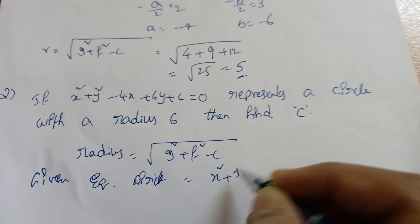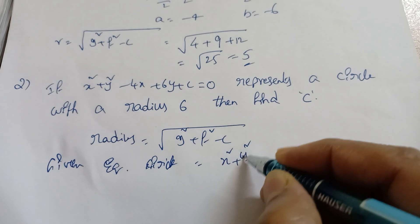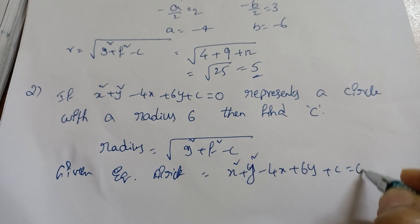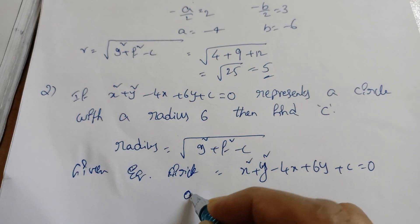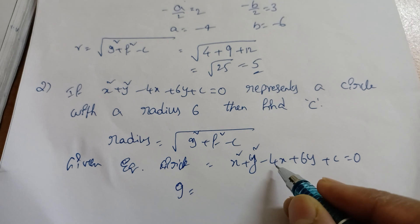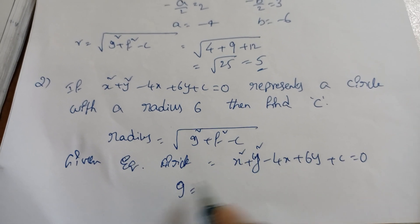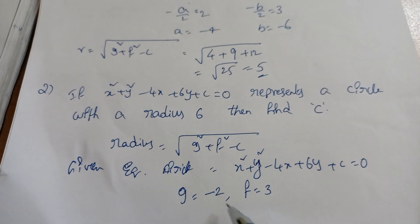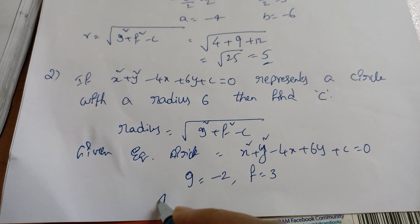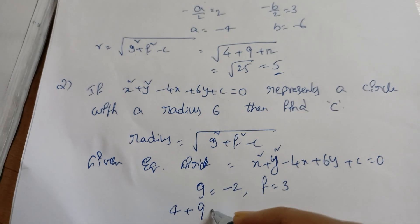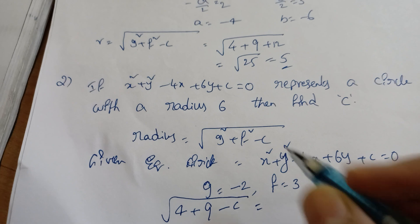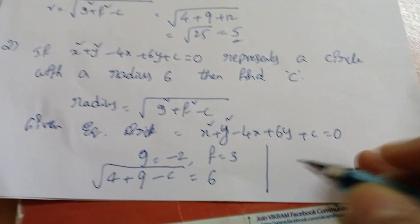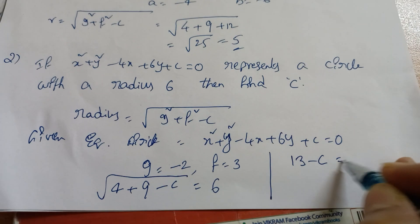The given equation is x² + y² − 4x + 6y + c = 0. Comparing: g = −2, f = 3, and c = c. Applying the radius formula: √((−2)² + 3² − c) = 6, which gives √(4 + 9 − c) = 6, i.e., √(13 − c) = 6. Squaring both sides: 13 − c = 36.